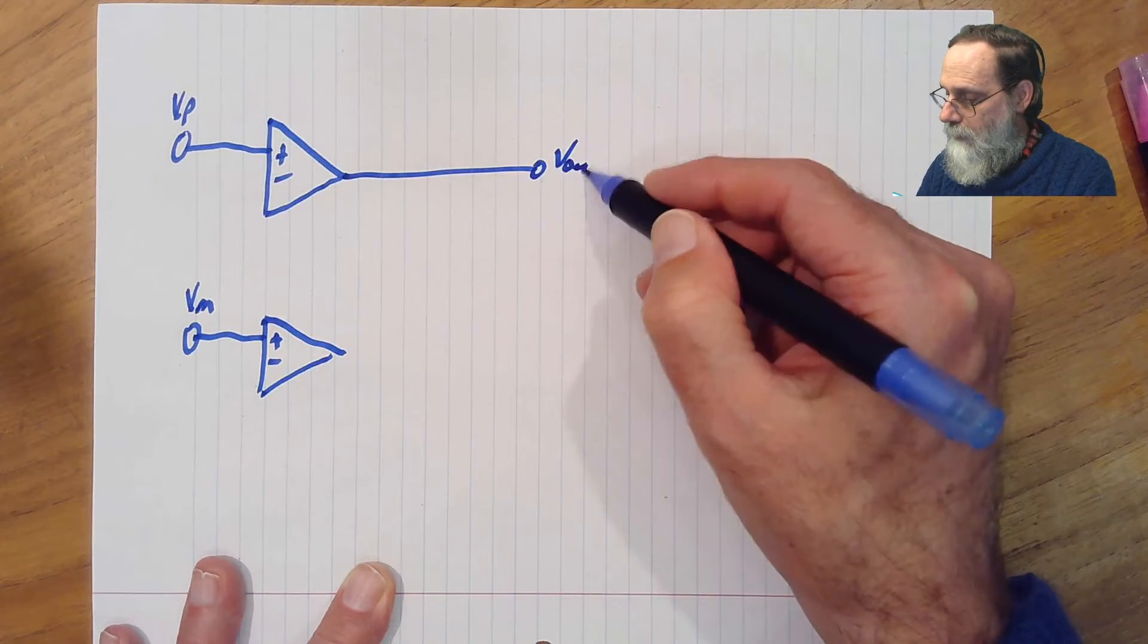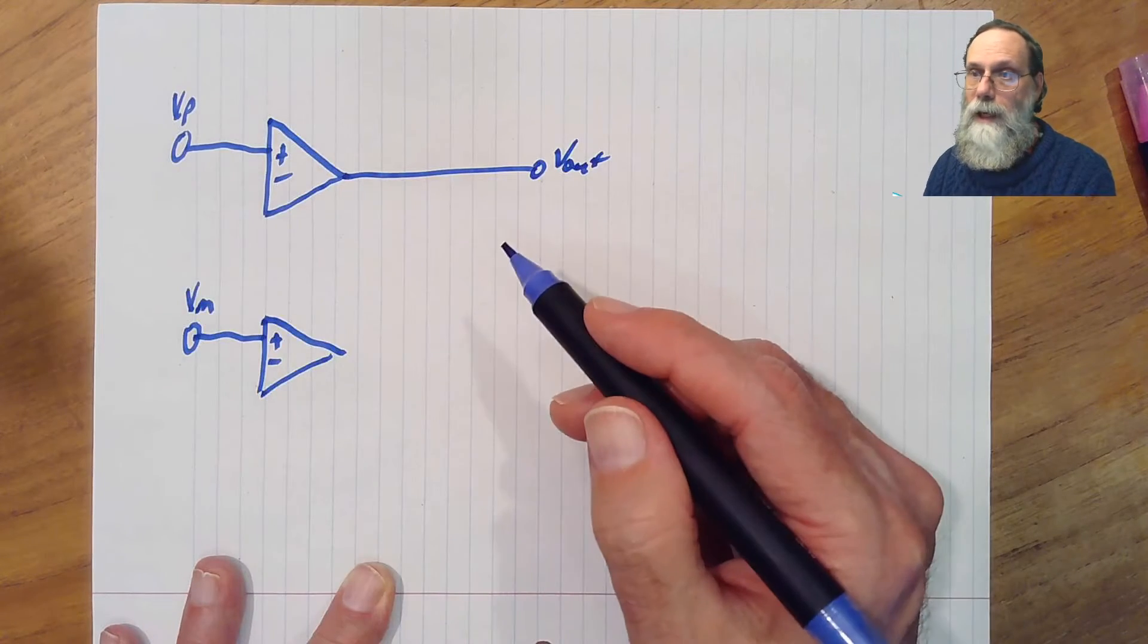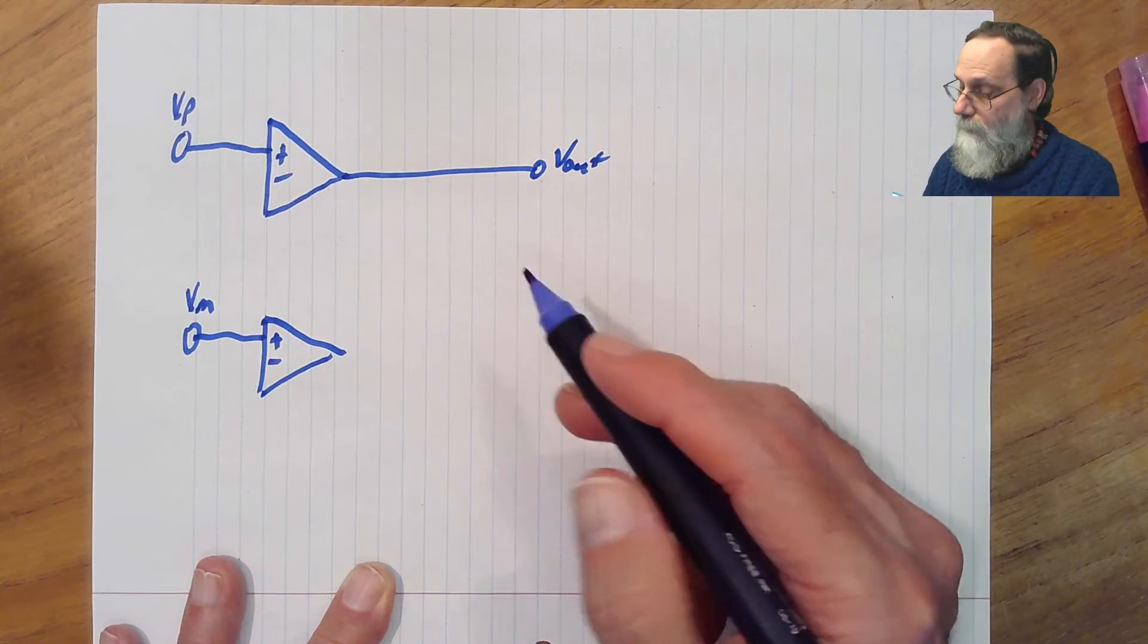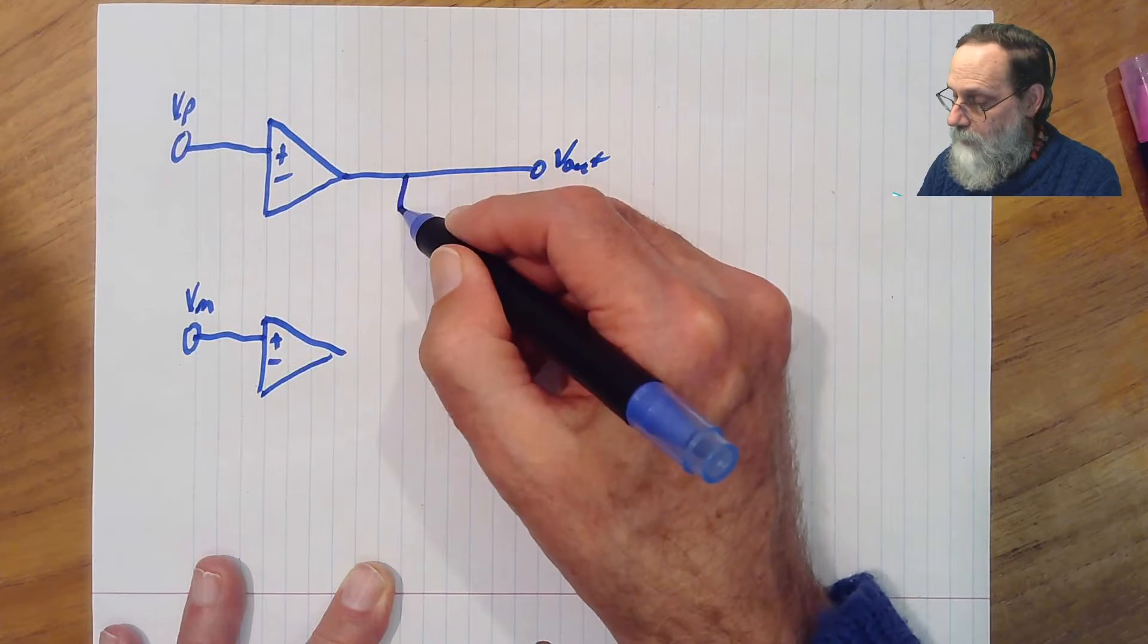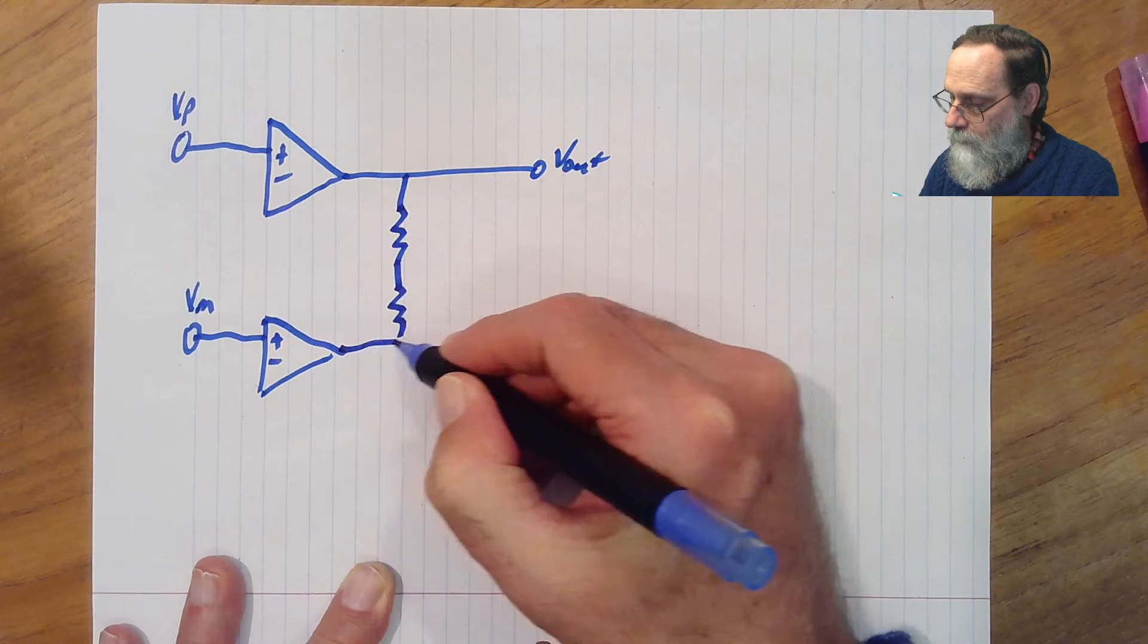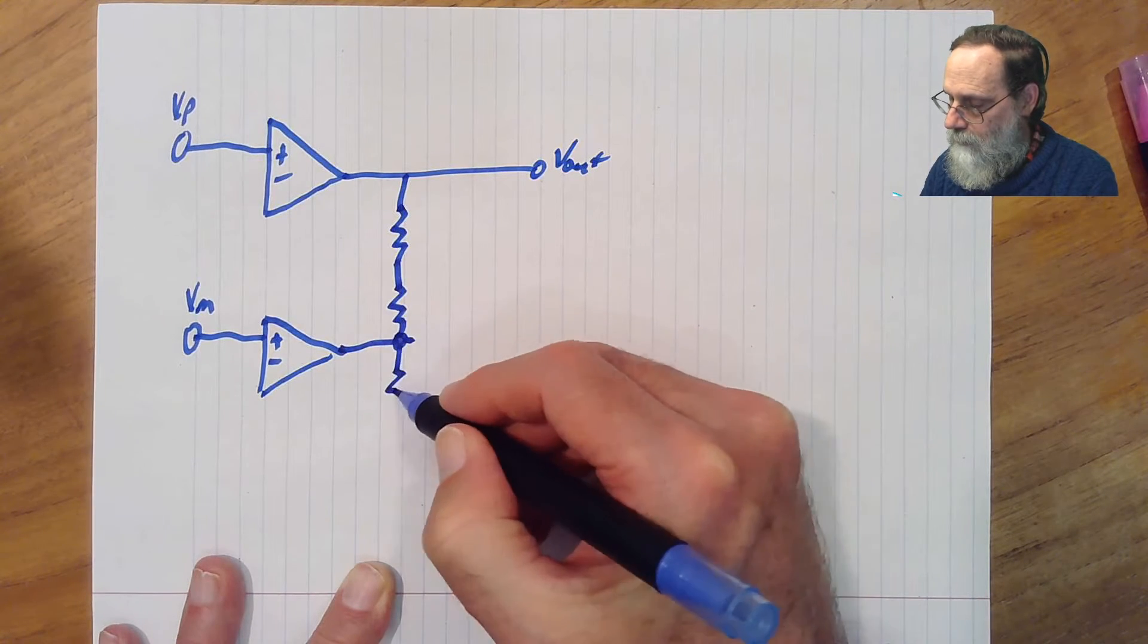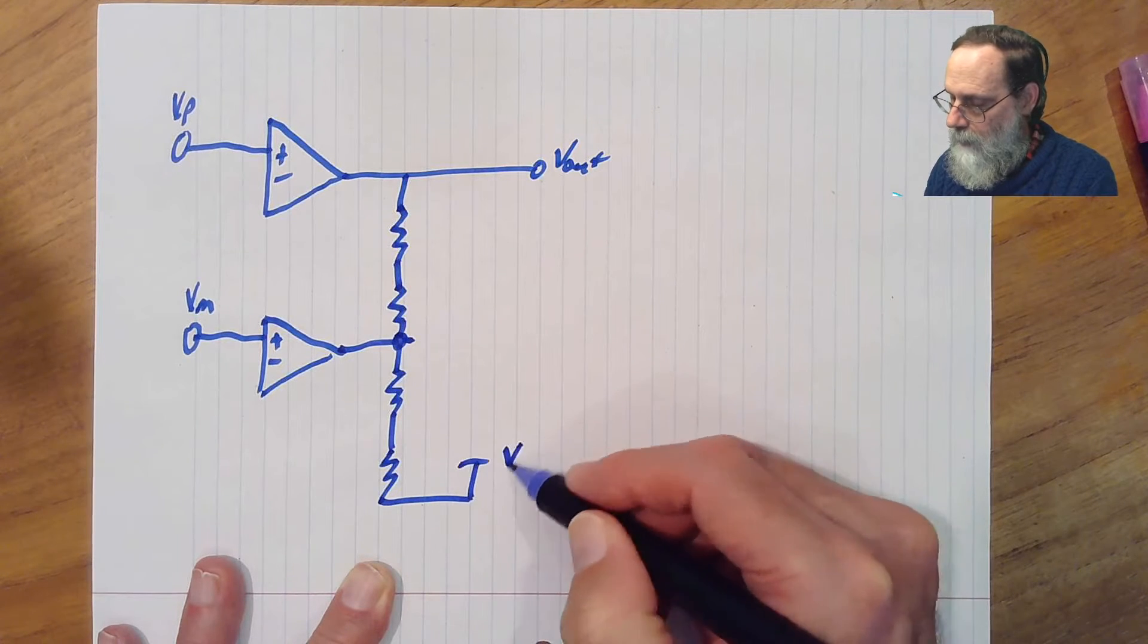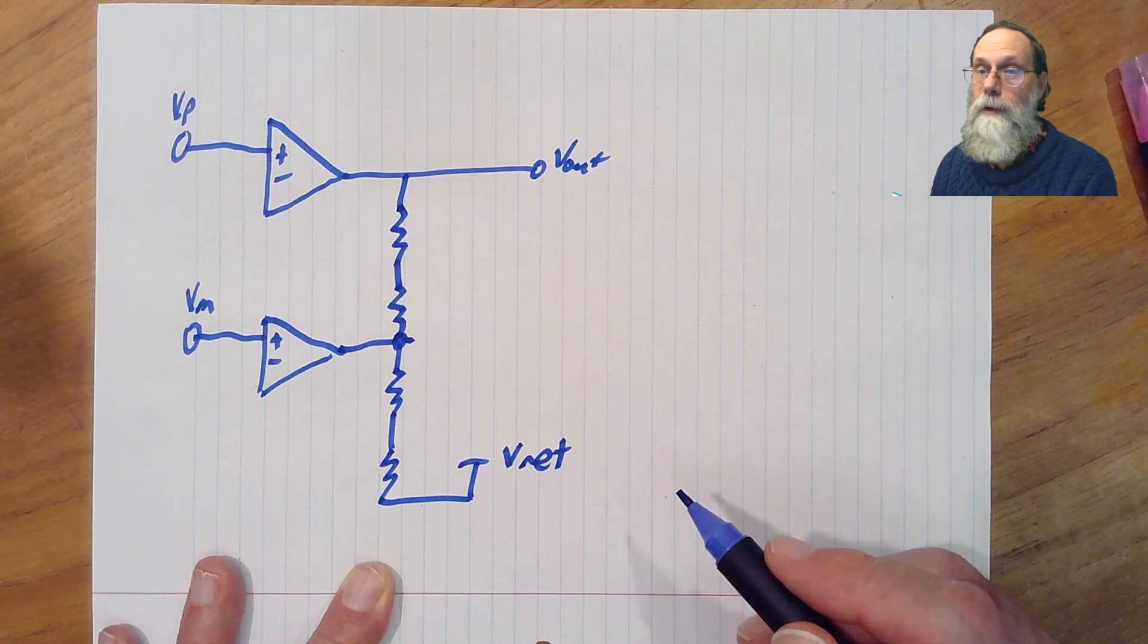We'll make the positive input op-amp have the output for the circuit, and now we've just got to have some resistors. And we'll have Vref coming in here at the bottom.